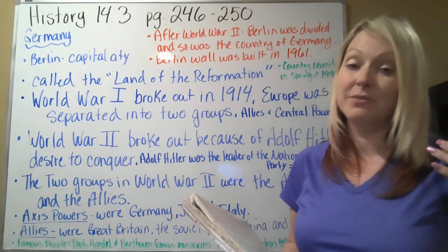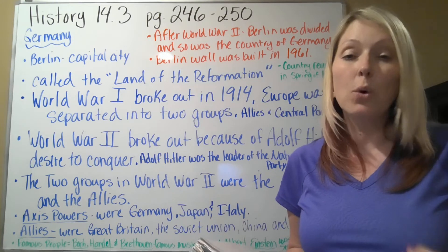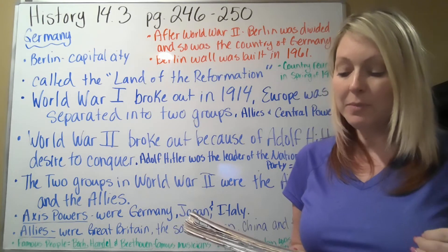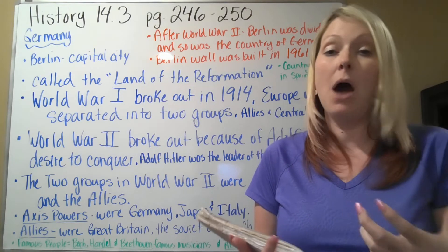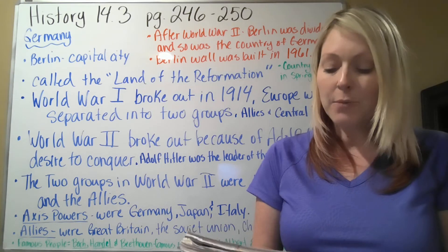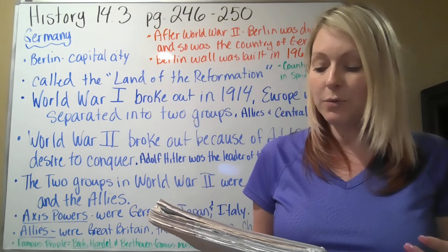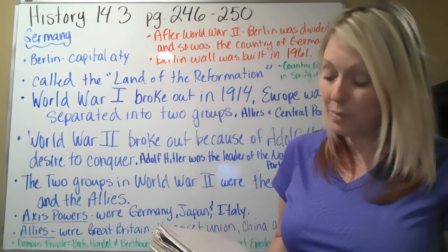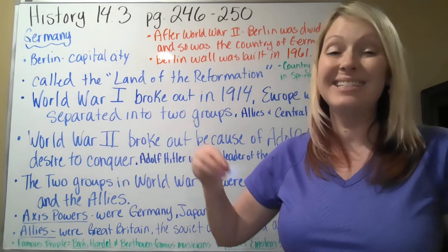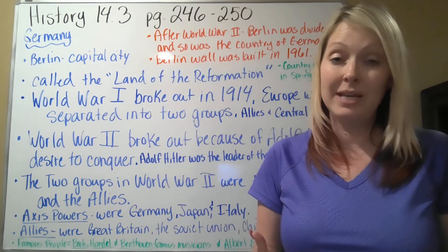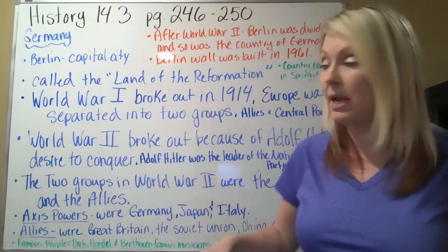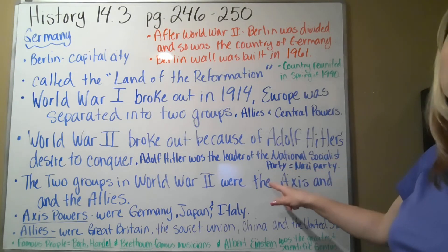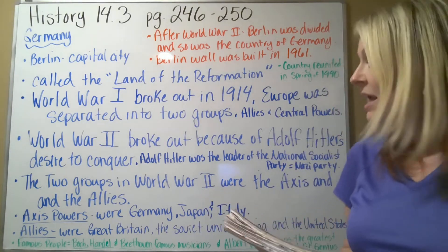Hitler told the people that the government was more important than the individual, and that there was a superior race. The German people, eager to gain power, ended up blindly following his beliefs. He became one of the cruelest dictators in history. World War Two broke out because of his desire to conquer, and the way he mistreated people in his own nation and in surrounding areas. He was the leader of the National Socialist Party, also called the Nazi Party.